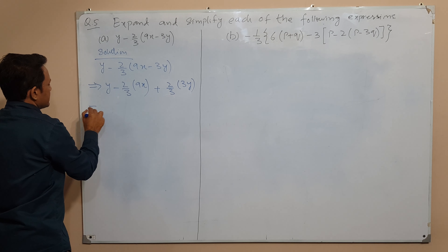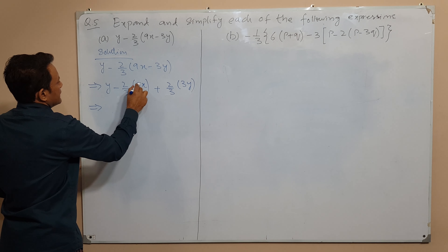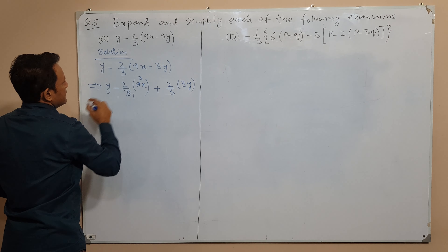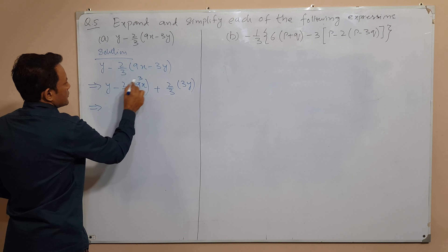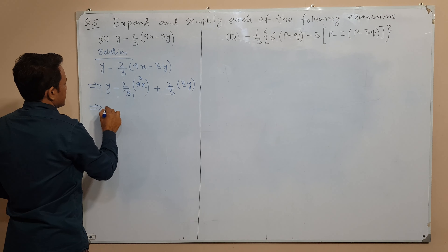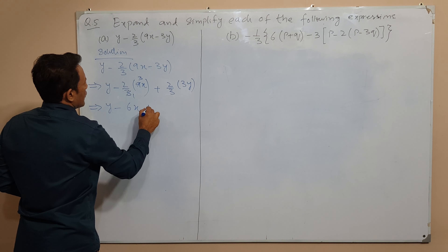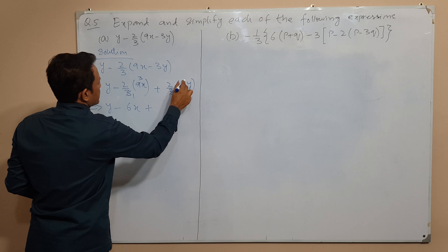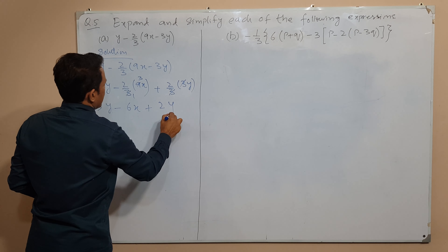तो अब ये क्या हो जाएगा - 3 upon 3 cancel होंगे, 2 into 3 equals 6, तो y minus 6x आएगा, और plus 3 से 3 cancel होगा, तो हमारे पास 2y आ जाएगा।